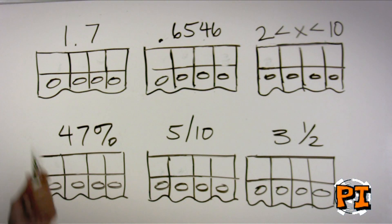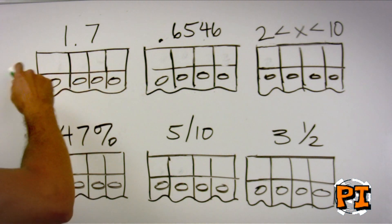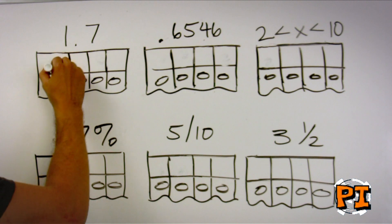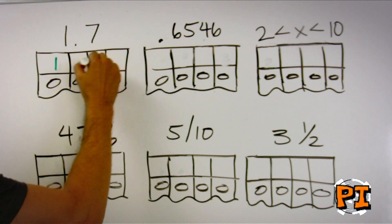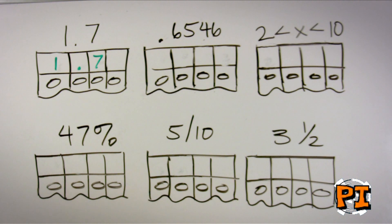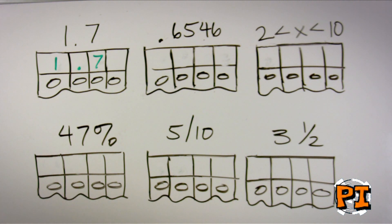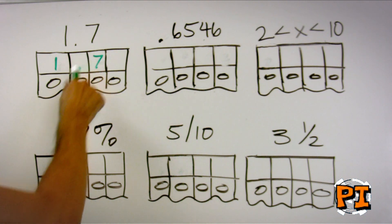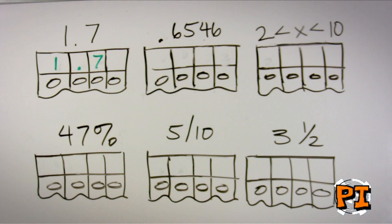Let's assume you answered a question as 1.7. The thing you do for all of these is you always start off bubbling on the left-hand side. This avoids you running out of room and having to waste time erasing. If your answer is 1.7, you would write at the top 1.7 and bubble in the appropriate ovals underneath. It is important to know that you only get credit for what you bubble in. What you write above is simply to help guide you with the bubbling.